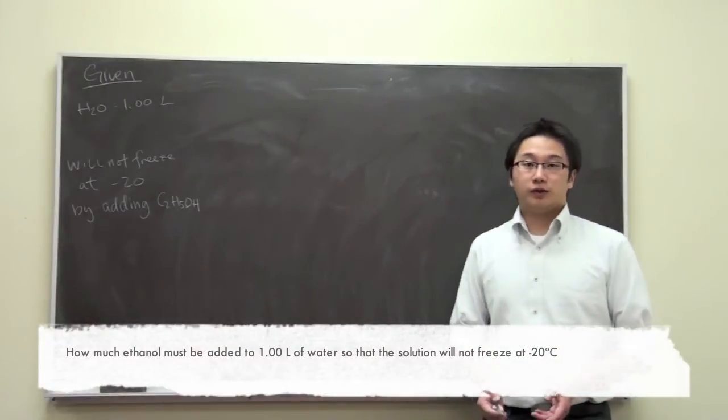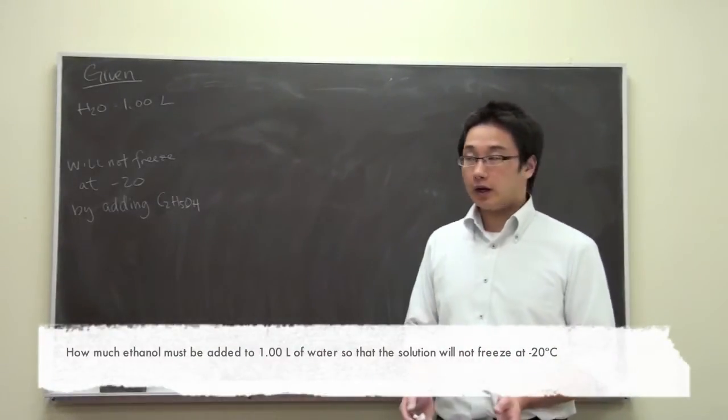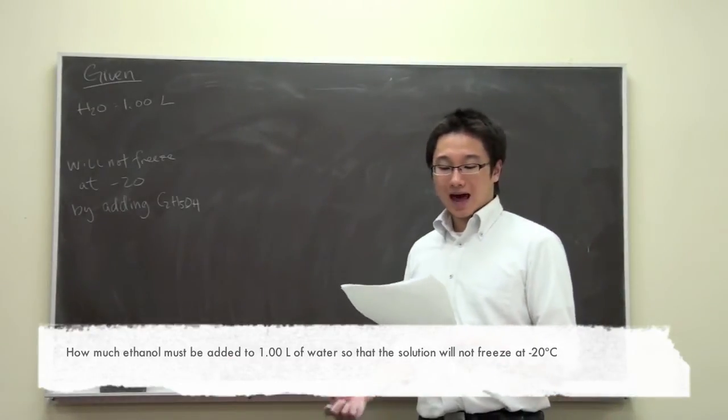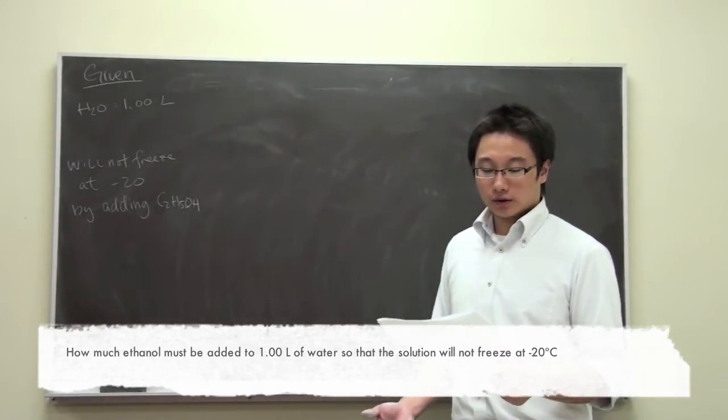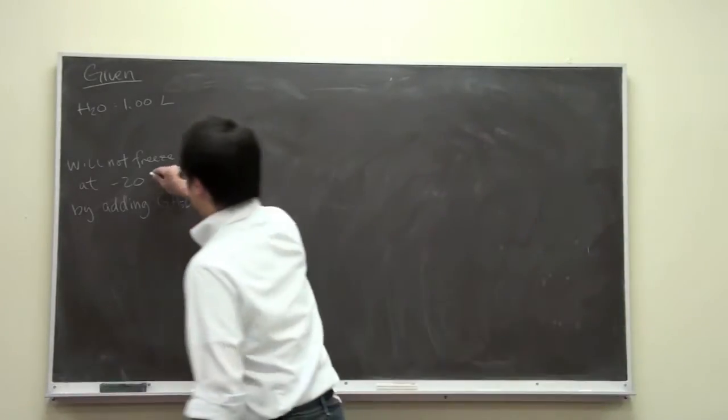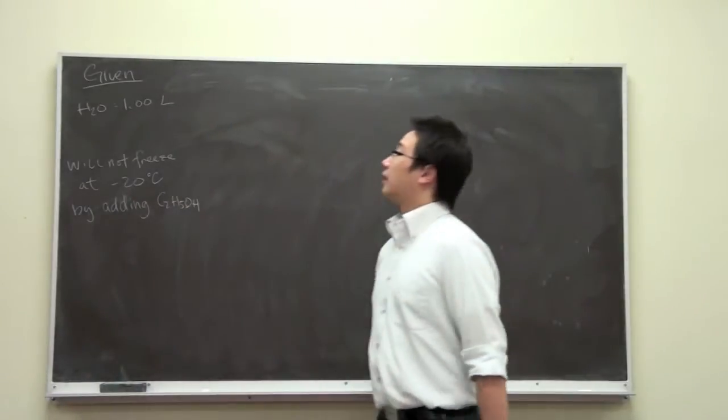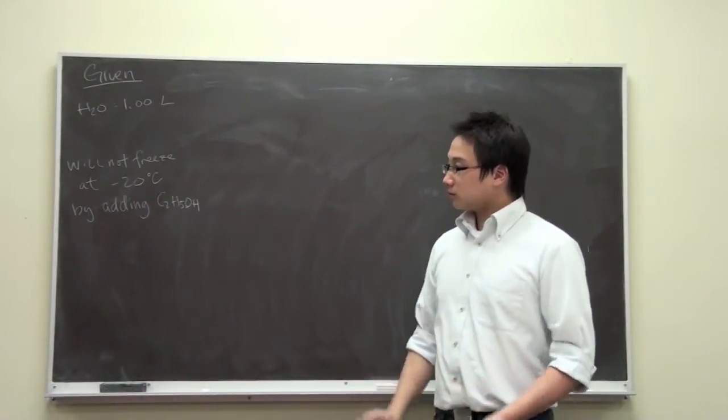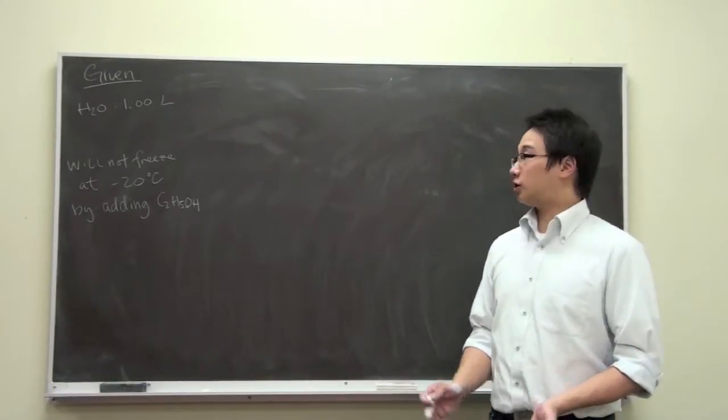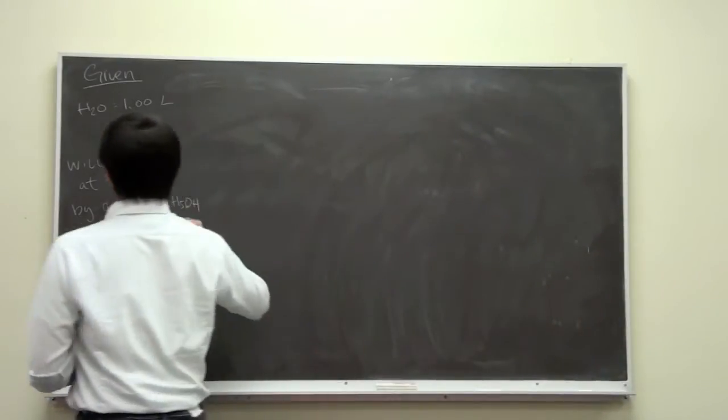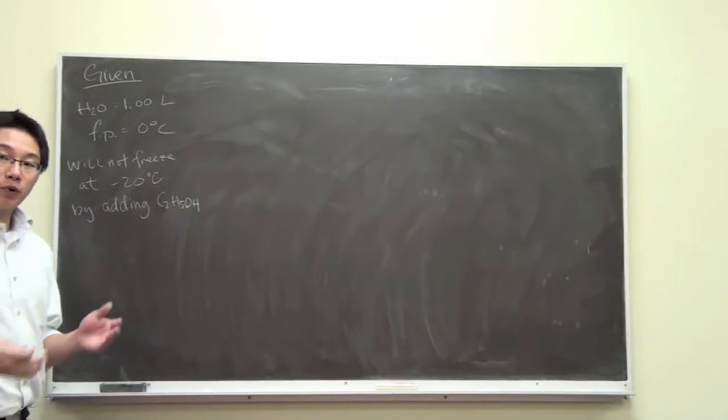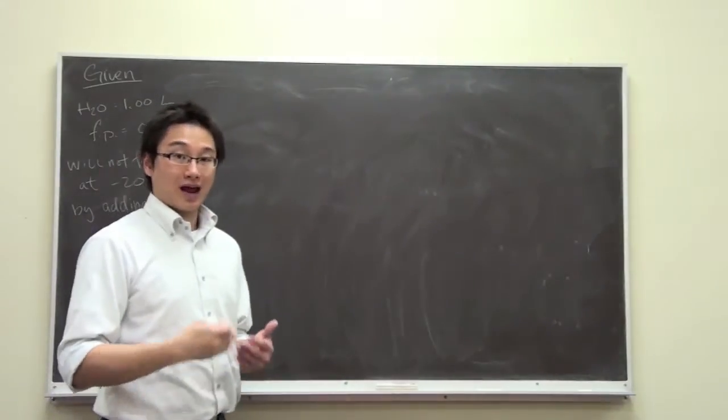In the very first question of worksheet number three, we have a question asking how much ethanol must be added to one liter of water so that the solution would not freeze at negative 20 degrees Celsius. Let me write another unit here. We know that it is a freezing point depression problem because normally the freezing point of water is at zero degrees Celsius and we are trying to push it down to negative 20 degrees Celsius.